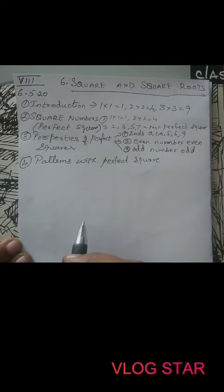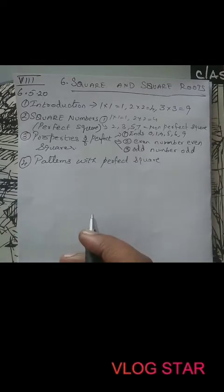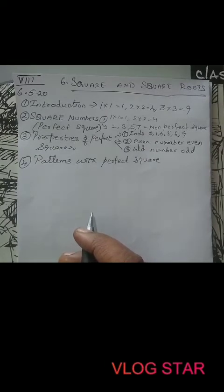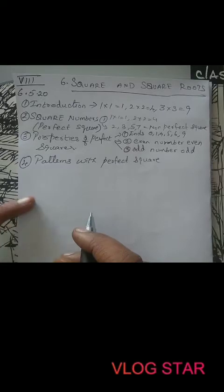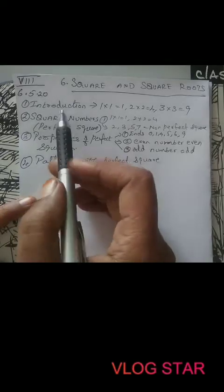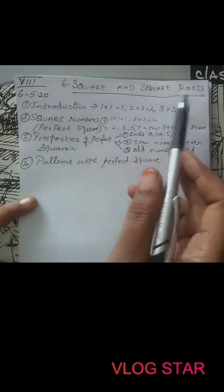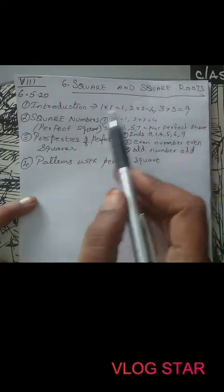Good evening students. Today we will do the squares and square roots continuation from what we have done in the last class. In the last class, we learned from Chapter 6: Square and Square Roots.